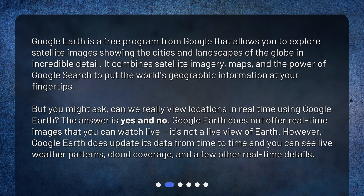But you might ask, can we really view locations in real-time using Google Earth? The answer is yes and no. Google Earth does not offer real-time images that you can watch live. However, Google Earth does update its data from time to time, and you can see live weather patterns, cloud coverage, and a few other real-time details.